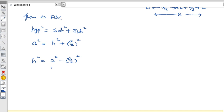h squared equals a squared minus a squared by 4. If you do LCM, this is 4, so 4a squared minus a squared by 4. That is 3a squared by 4, which is the value of h squared.